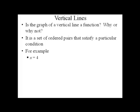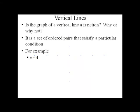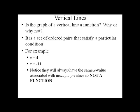For example, x equals 4 is an example of a vertical line. Here's its graph. Notice all the x values are 4. x equals negative 11 would be a graph whose x values are all negative 11. Notice that we always have the same x value associated with multiple y values. So one input associated with an infinite amount of outputs, and thus it is not a function.